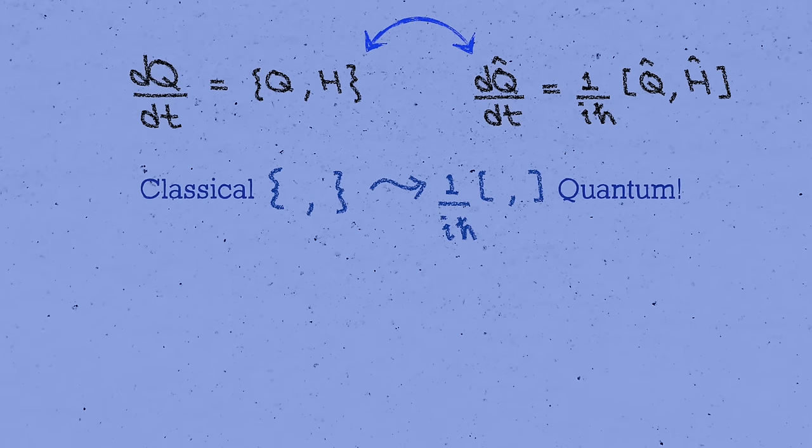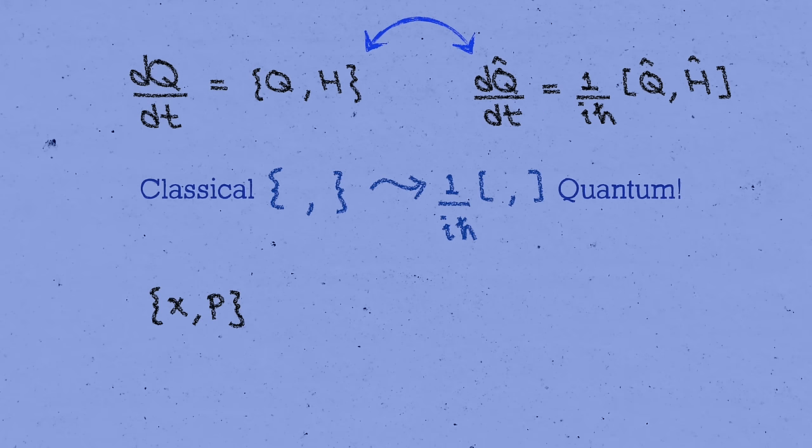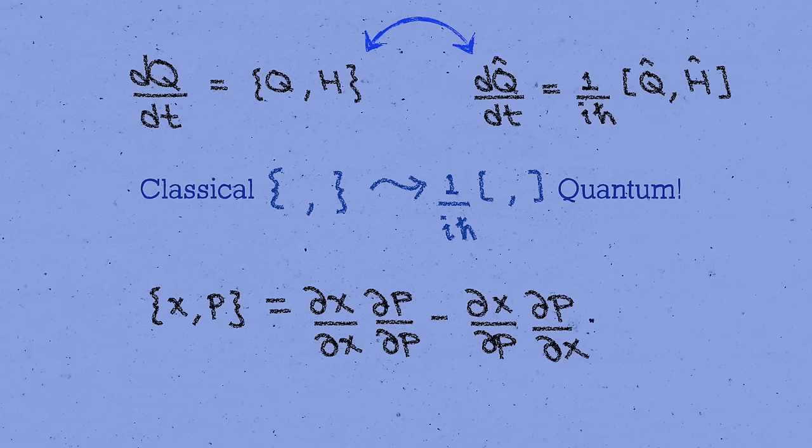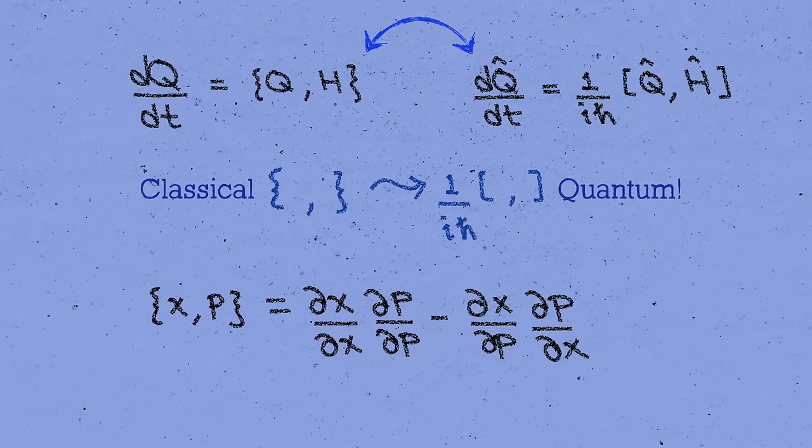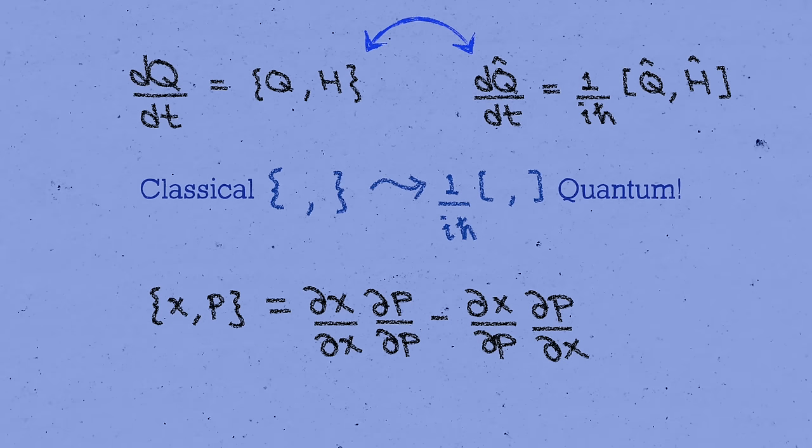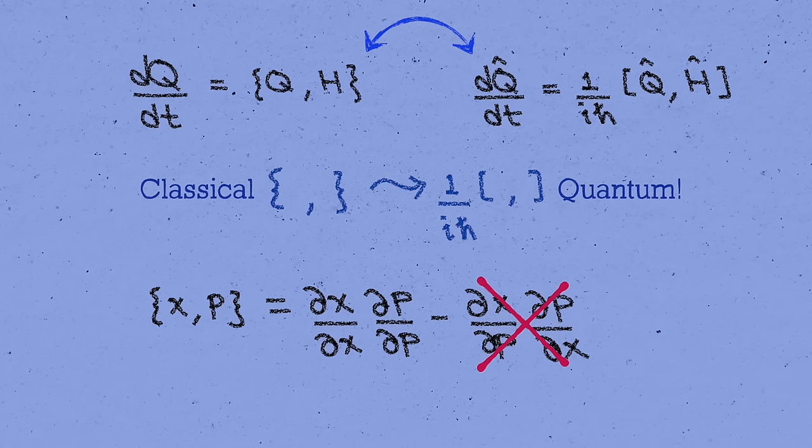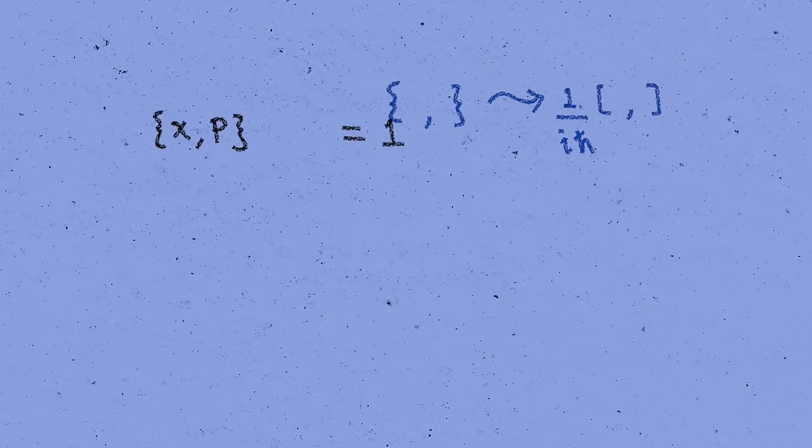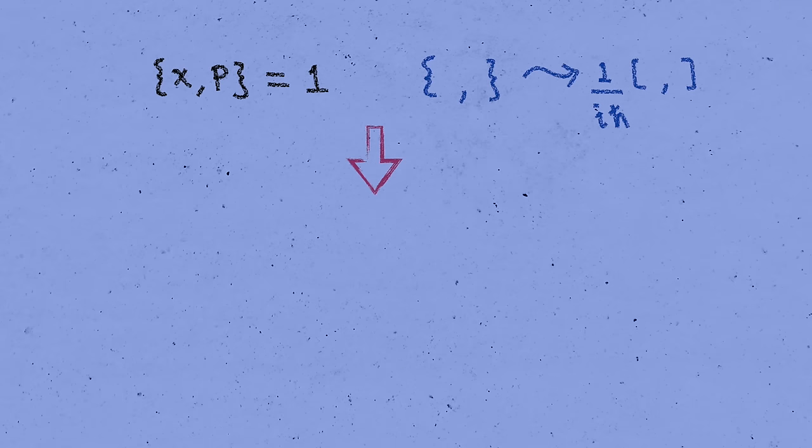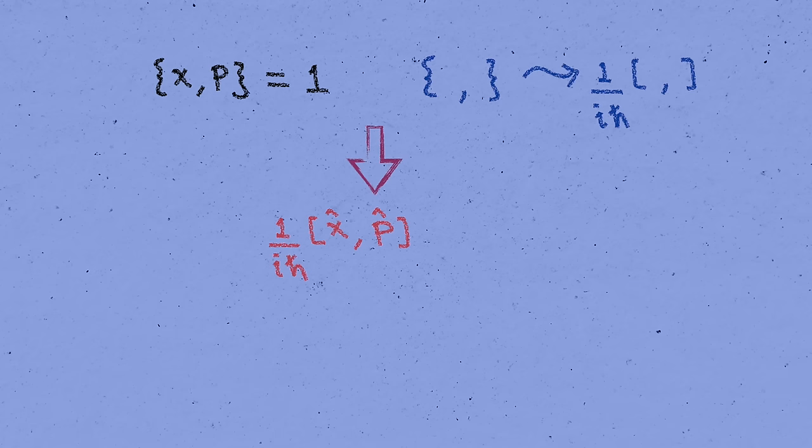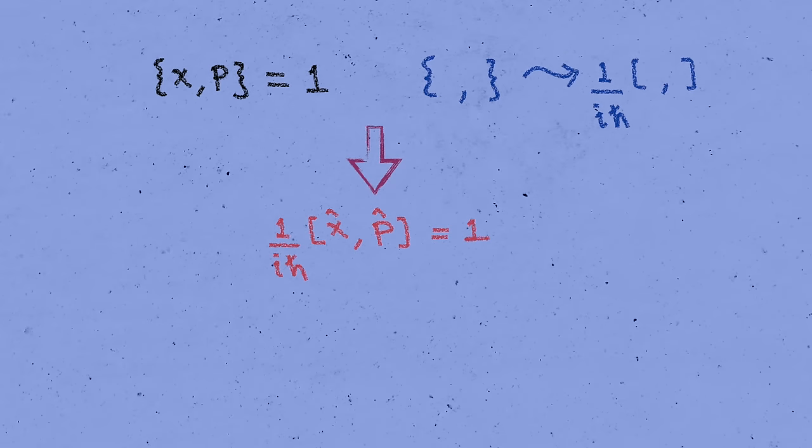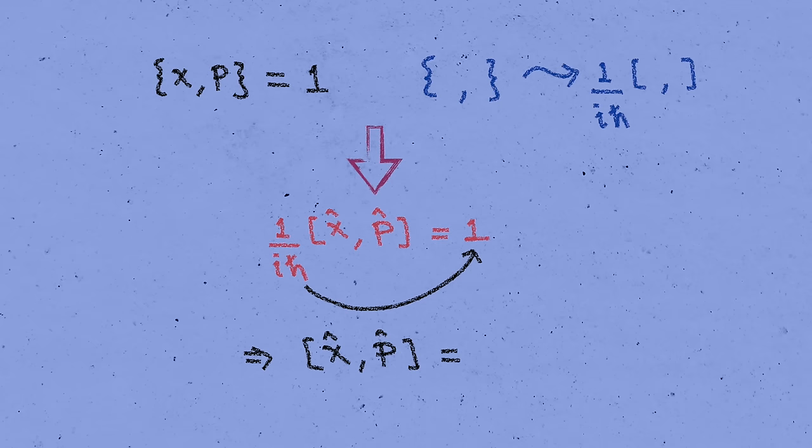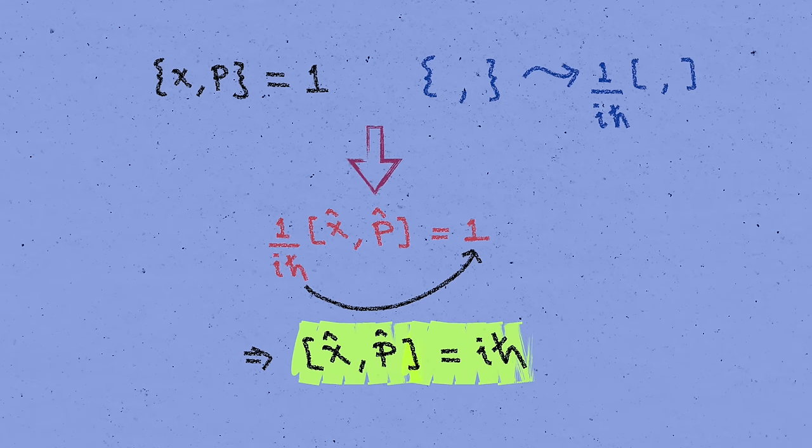Let's look at another example. What's the Poisson bracket of q1 equals x and q2 equals p? Well again, plugging it into our definition, we get the bracket of x with p equals dx by dx times dp by dp minus dx by dp dp by dx. The second term is zero and the first term is one, and so we find that the Poisson bracket of x with p is just one. Now what happens when we apply our proposed relation and replace this Poisson bracket with the commutator of the position operator and the momentum operator divided by i h-bar? We find that it's equal to one, and if we multiply the i h-bar to the right-hand side, we get one of the most fundamental equations in quantum mechanics, the canonical commutation relation between position and momentum.